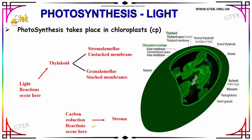The carbon reduction reaction occurs here in the stroma. You can see the stroma here. The chloroplast envelope has an outer membrane, inter-membrane space, and the inner membrane. Here is the grana lamella, stromal thylakoid, and thylakoid.